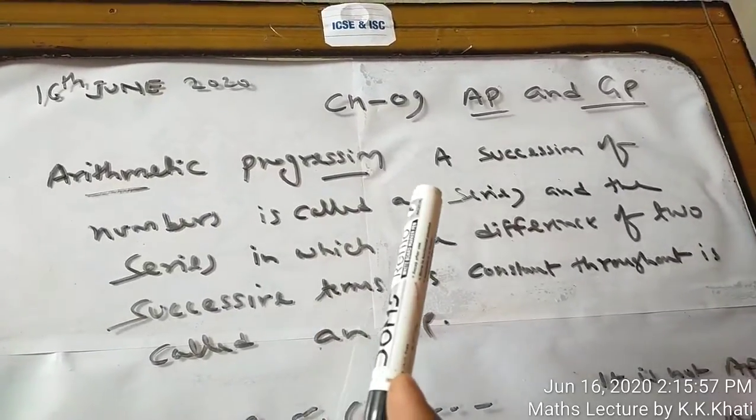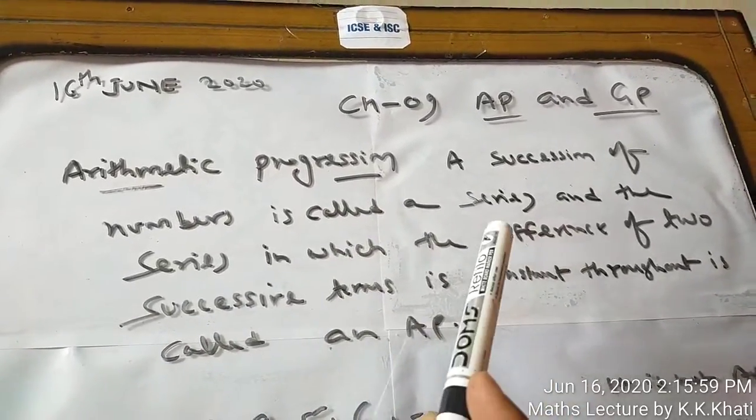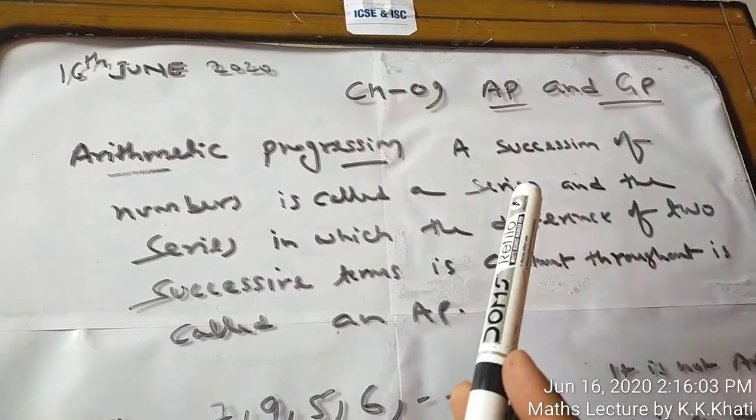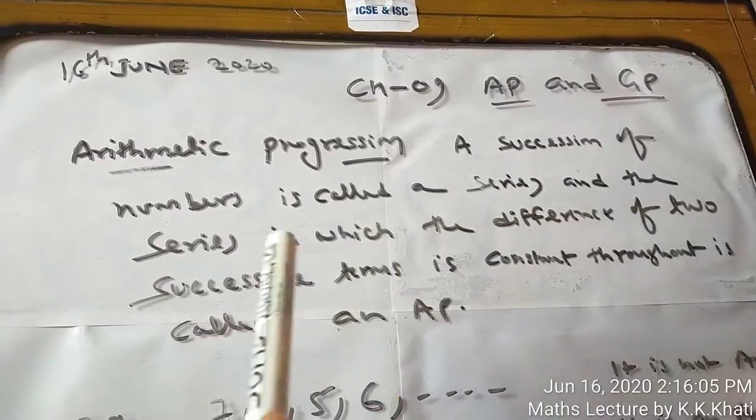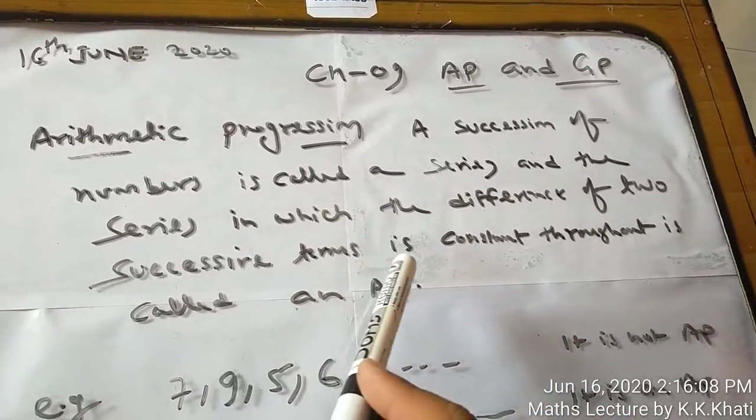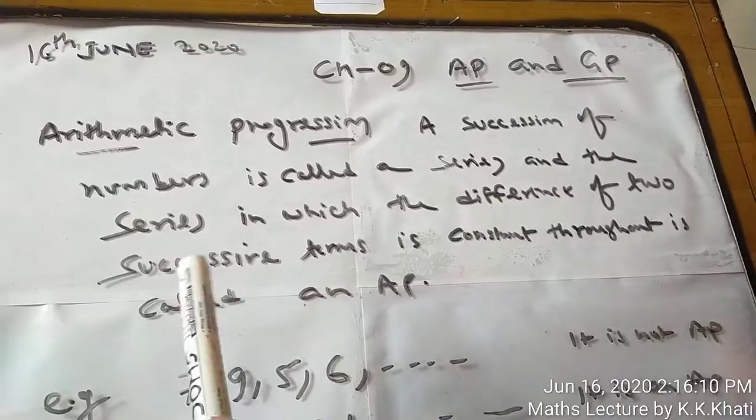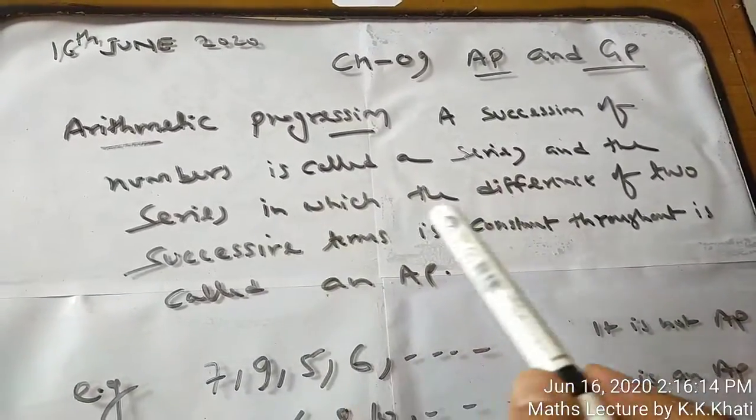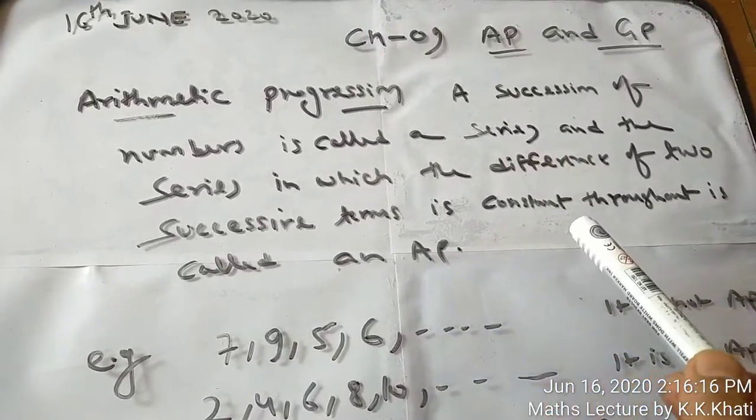The definition is: a succession of numbers is called a series. And the series in which the difference of two successive terms is constant throughout is called an AP.